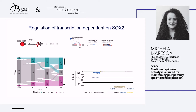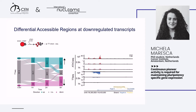One example is this pluripotency-associated transcript. Here you can see the TT-caMC track, and with TT-caMC you can now pinpoint the exact TSS of the gene — where the transcript starts. The gene is transcribed with SOX2, and then after 30 minutes it's gone. Looking at the accessibility around this region, there is a peak that loses accessibility at the same time point, matching the TT-caMC data highlighted here.